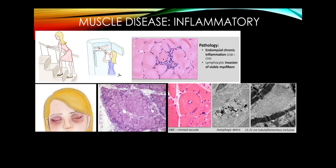The other inflammatory myopathy to know is inclusion body myositis, where we have inclusion bodies. On electron microscopy, we can see tubulofilamentous inclusions. IBM affects older men. A unique clinical feature is that they have proximal weakness in the legs, but in the arms, it's especially the finger flexors — a unique and worthwhile finding to remember.